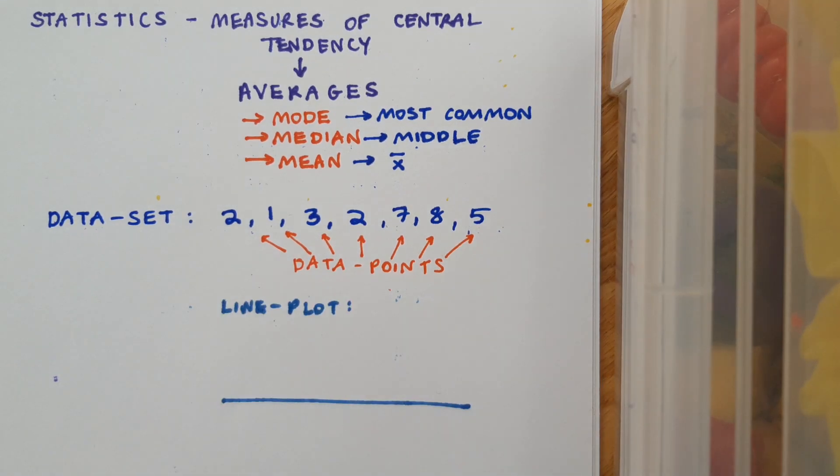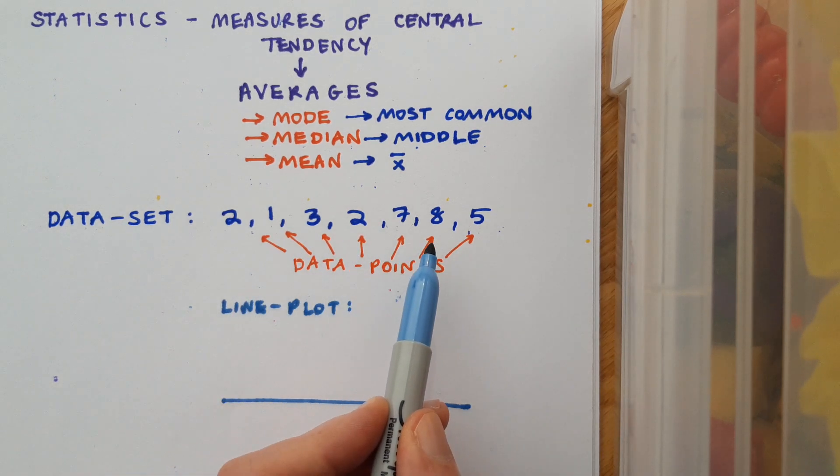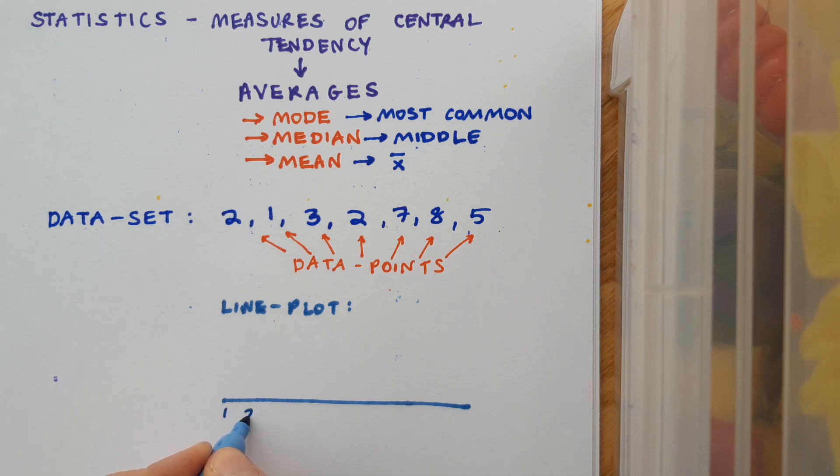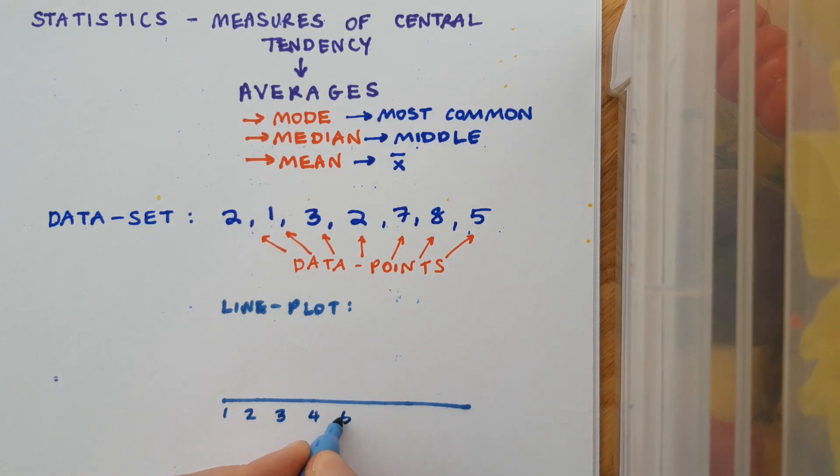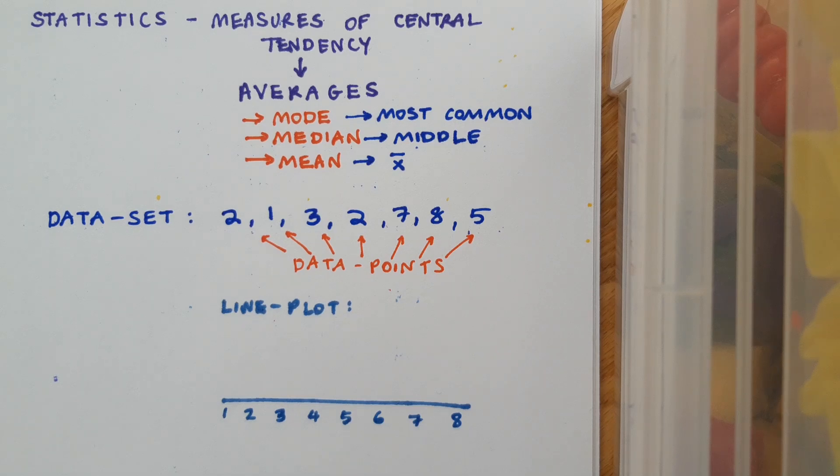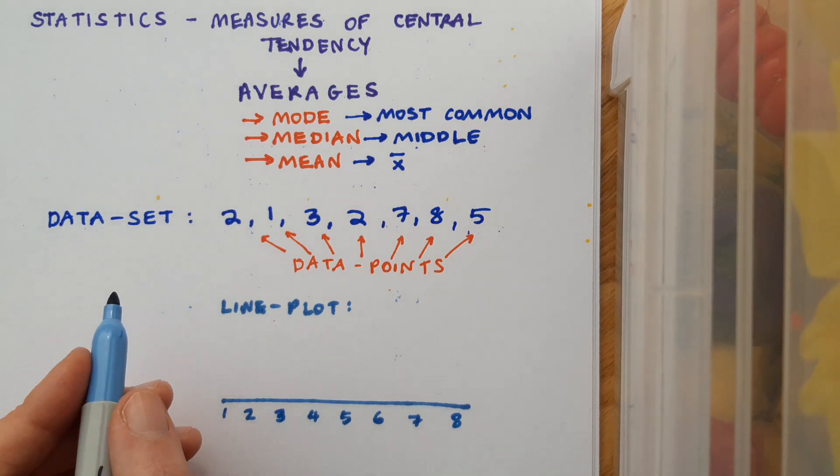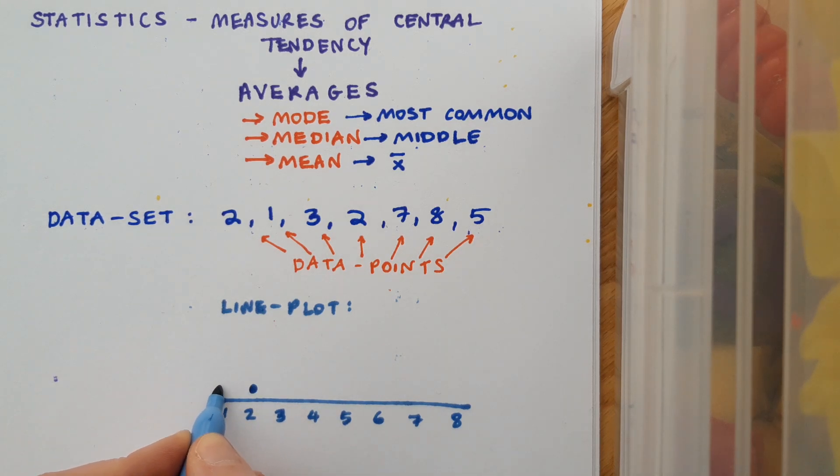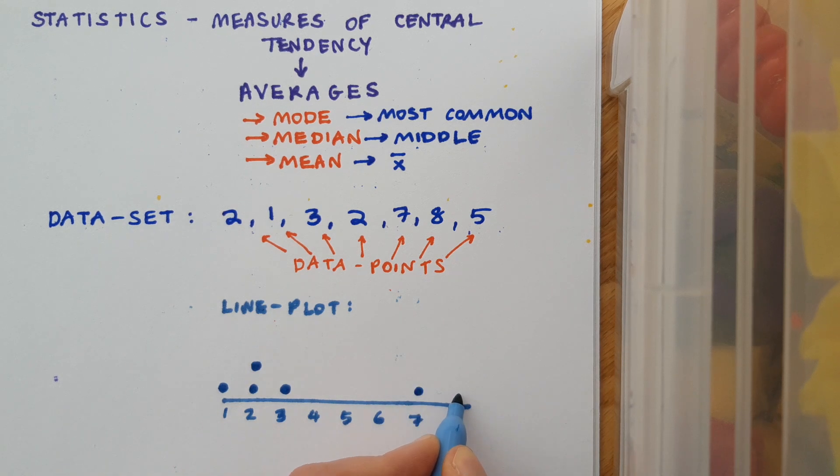Sometimes it's convenient to do this using a line plot. It's not compulsory, but it gives you an idea of what the data looks like. So to draw my line plot, I'm going to first have a quick glance at my numbers and see that one is my lowest and eight is my highest. So I'm going to put those values along the bottom. And then I'm going to organize my data by reading my data set through and putting a dot above each value. So I've got 2, 1, 3, 2, 7, 8, 5.